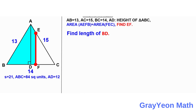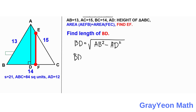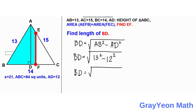Next thing that we have to do is we need to find the length of BD. BD is equal to the square root of AB squared minus AD squared, because AD and BD are two perpendicular segments and they form a right triangle with length AB. So BD is equal to the square root of 13 squared minus 12 squared, which simplifies to the square root of 1 times 25, so square root of 25 is equal to 5 units.